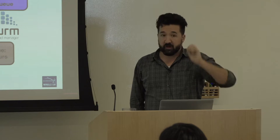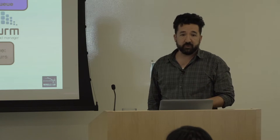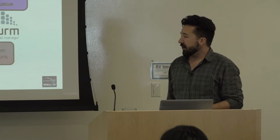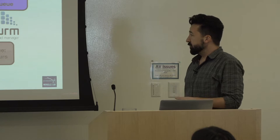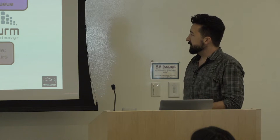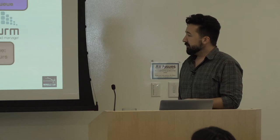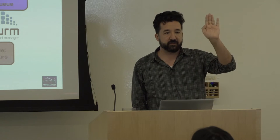We have a couple of nodes for running big memory jobs, which are important for data analytics, and special nodes set aside for pipelines and workflows. CORI is the first system where we've been running containerized environments in production — that's going to be the last talk today. We also have ways of streaming data to and from the compute nodes, and configurable access over the network to the compute nodes from outside, which is kind of new. We have the burst buffer — there's going to be a talk about that for storage and IO later today. And we have a really flexible workload manager in Slurm, which gives us the ability to field experimental queues like the serial queue, the shared queue, the transfer queue, real-time queues, and interactive queues.